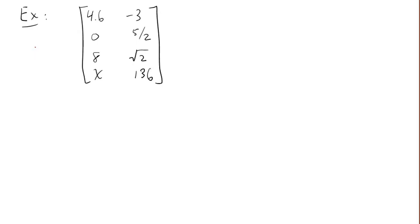Let's take a look at another example. This matrix has 4 rows and 2 columns, and therefore it's a 4 by 2 matrix.